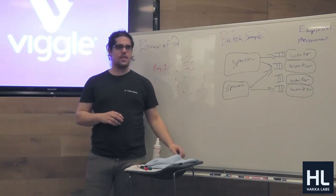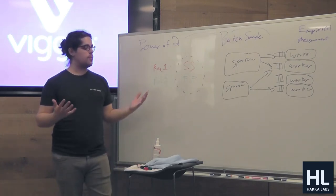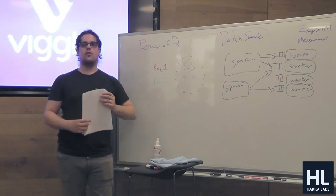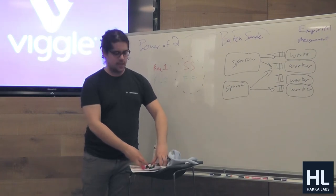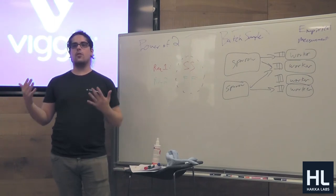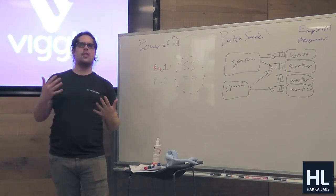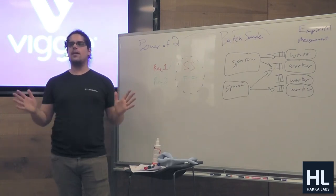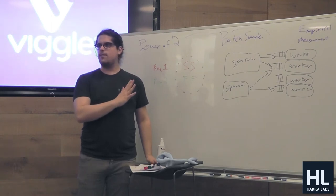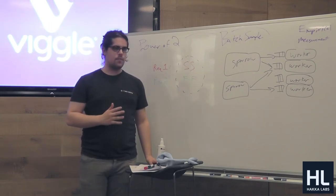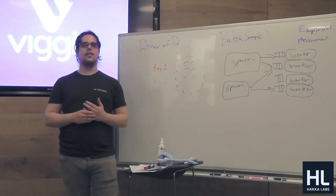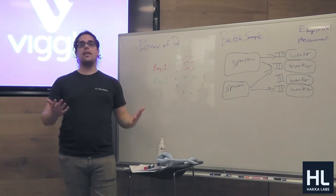Now the last really important thing in the Sparrow paper is empirical measurement, which they call late binding. There's actually a big problem with everything we've discussed — these ideas are a substantial improvement but not killer on their own. Late binding is what makes Sparrow killer. The problem is that queue depth is a poor proxy: what if the 10-element queue has jobs of 10 milliseconds each, but the 3-element queue has jobs of 1,000 milliseconds each? The 10-element queue would actually be six times faster.